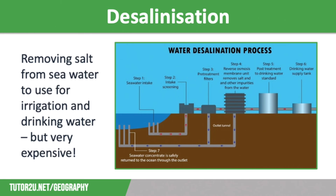The pros and cons of desalination: it increases the amount of water available and improves water security. However, it is very expensive — both the process itself and the transportation of desalinated water to inland areas — making it only suitable for HICs, which limits its impact on global water security. There are also environmental issues, including dumping waste salt back into the sea, and it requires a lot of energy, giving it a large carbon footprint.